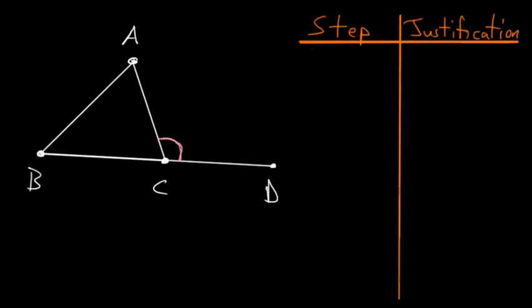So to start this, we first want to use book 1, proposition number 10, to bisect the line AC at some point here, which we can call E. So essentially, we now know that AE is equal to EC, and then we can use postulate number 1 to connect the points B and E.